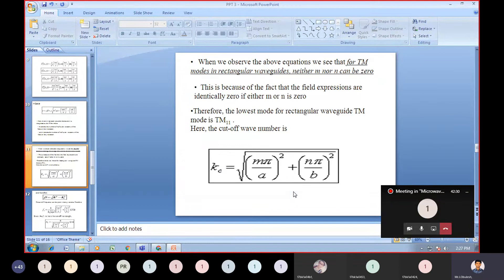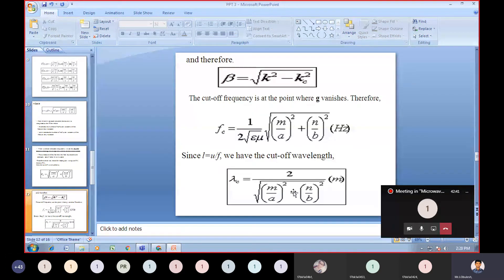The cutoff wave number is K_c equals square root of ((mπ/a)² plus (nπ/b)²). Therefore, β equals square root of (K² minus K_c²). The cutoff frequency is at the point where gamma vanishes. Therefore, f_c equals 1/(2√(εμ)) times √((mπ/a)² plus (nπ/b)²). Since λ equals vp/f, the cutoff wavelength λ_c equals 2π/√((mπ/a)² plus (nπ/b)²) in meters.